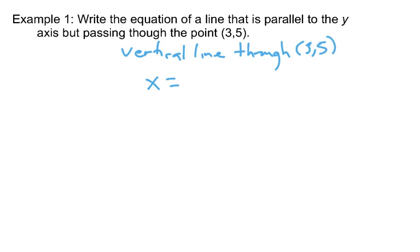X equals what? Well, this particular point has to work. So for that to work, x would have to equal 3, so that we would actually get that point. That's it. That's the equation of a line parallel to the y-axis but passing through the point (3,5).